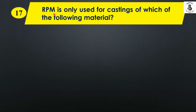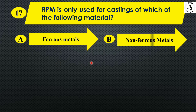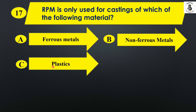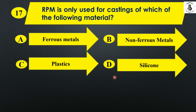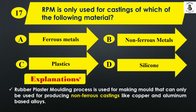Question 15: RPM is only used for castings of which of the following materials? Option A: ferrous metals. Option B: non-ferrous metals. Option C: plastics. Option D: silicon. The rubber plaster molding process can only be used for producing non-ferrous castings like copper and aluminum-based alloys. So the right answer is Option B, non-ferrous metals.